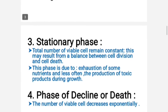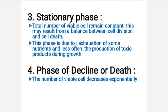In stationary phase, the reproductive and death rates equalize, the population enters a plateau, and the total number of viable cells remains constant. This phase is due to exhaustion of some nutrients — nutrient limitation is one obvious factor. If an essential nutrient is depleted, population growth will slow. A second factor may be accumulation of toxic waste products; for example, streptococci can produce so much lactic acid and other organic acids from sugar fermentation that the medium becomes acidic and growth is inhibited.